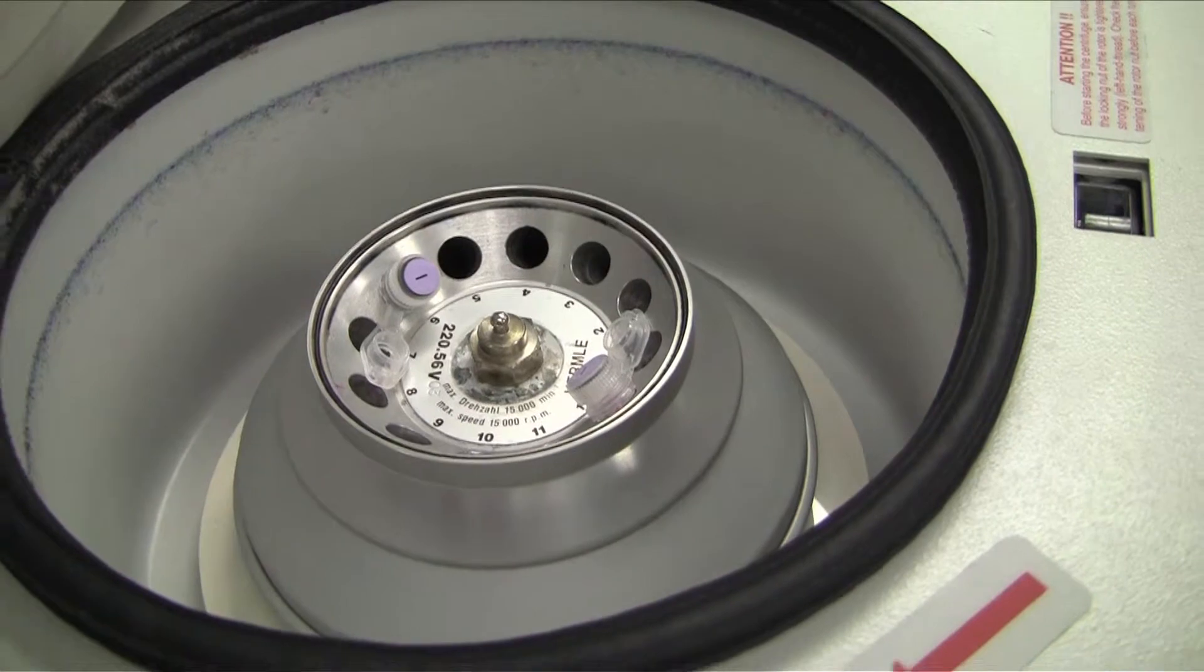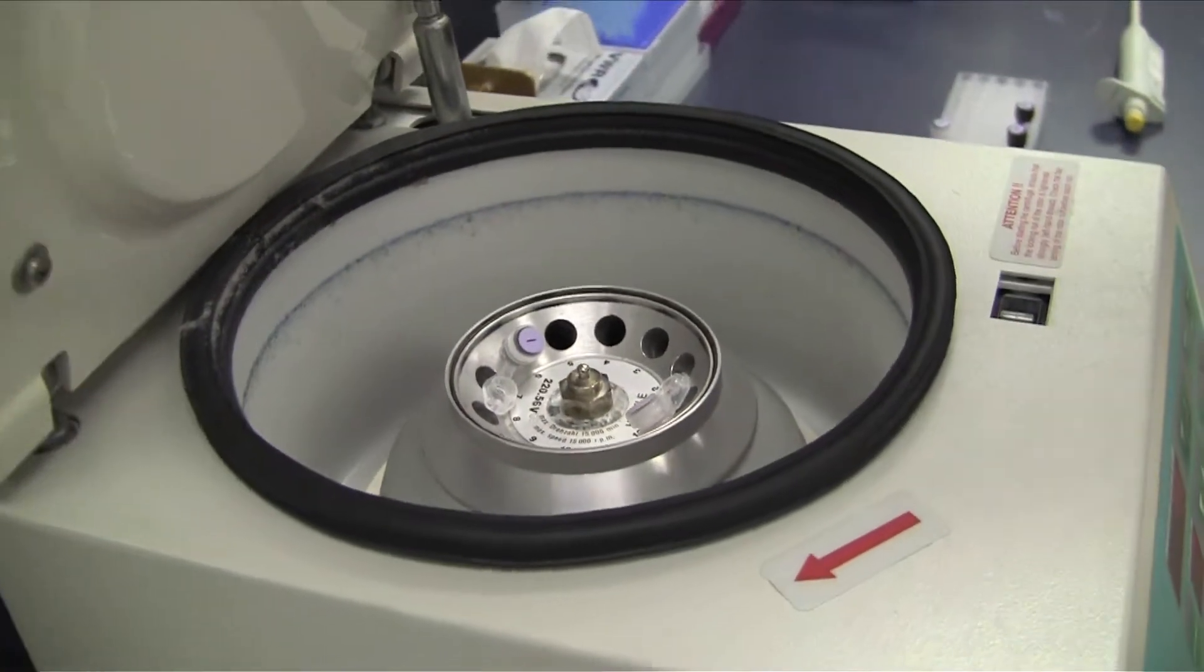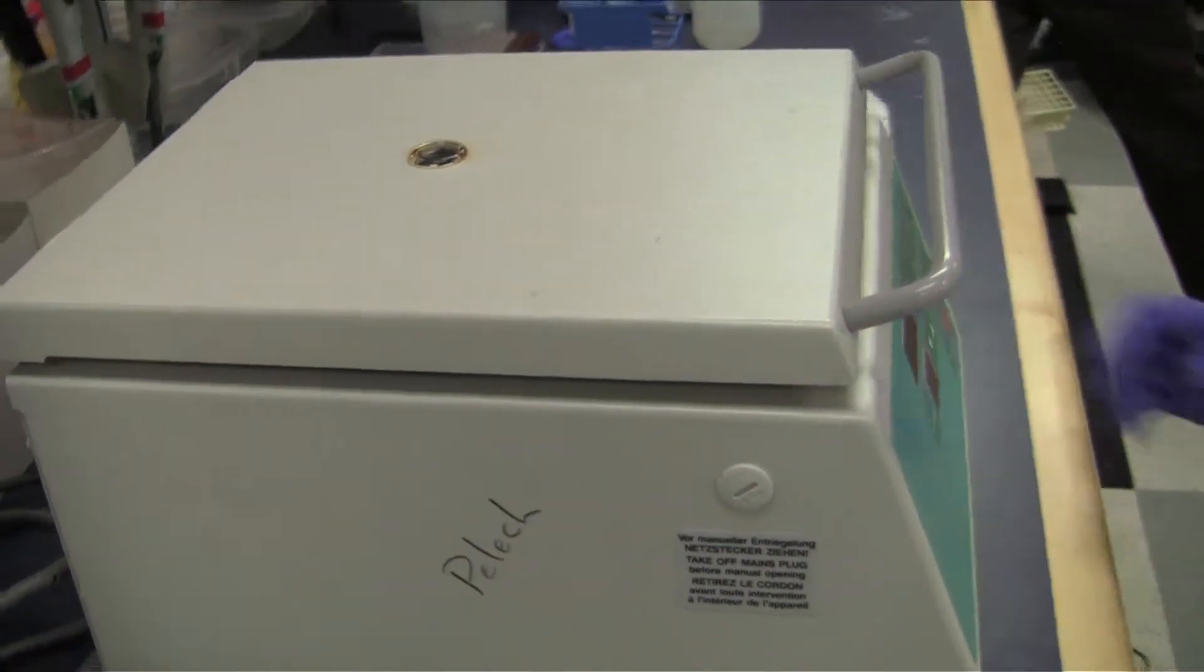Centrifuge for 2 minutes at 750 times G and recover the purified labeled sample from the bottom of the collection tube.